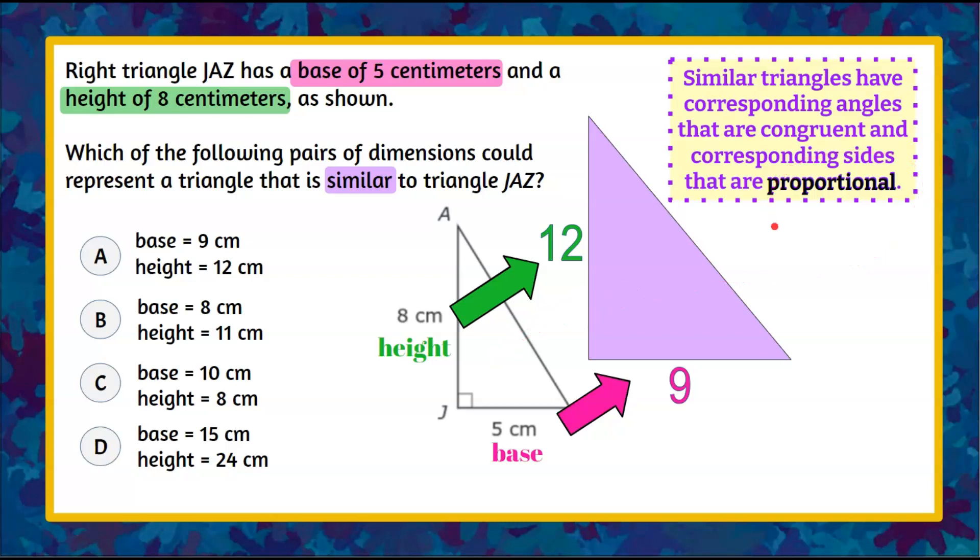So we're going to use the idea of proportionality to do this. We're going to set up a proportion. So our first ratio is going to be 5 to 9 and is that equal to our second ratio 8 to 12?